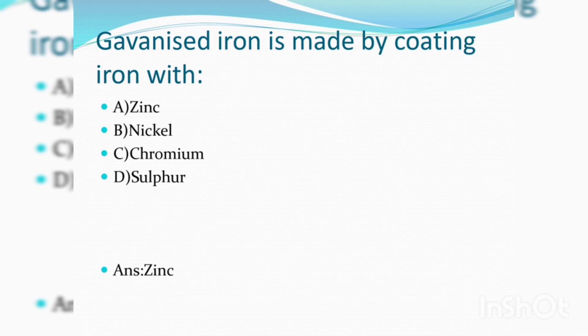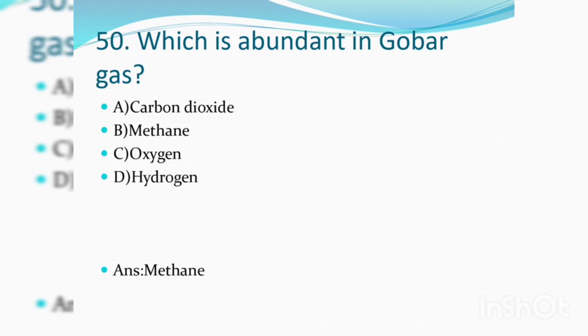Galvanized iron is made by coating iron with zinc. Which is abundant in gobar gas? Methane.